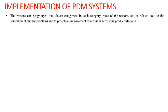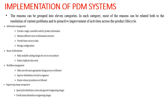The reasons can be grouped into 11 categories. The first is information management — providing a single controlled vault for product information, maintaining different views of information structure, providing faster access to data, and managing all configurations of data. The second is reuse of information — making existing designs available for new products and reducing duplicate data entry. The third is workflow management — ensuring the most appropriate design process is followed and improving distribution of work to engineers.